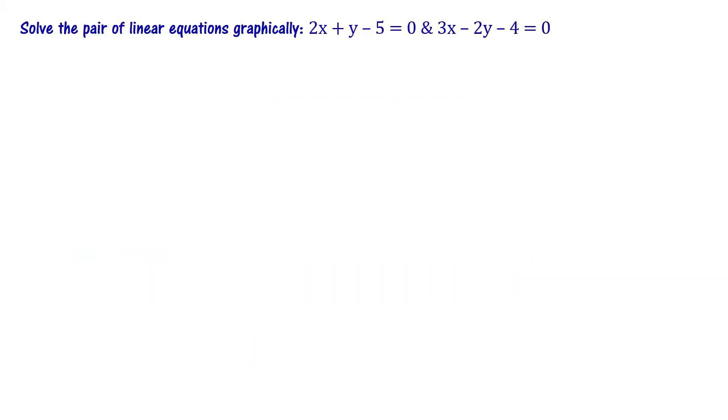Solve the pair of linear equations graphically: 2x + y - 5 = 0 and 3x - 2y - 4 = 0. These are linear equations in two variables, x and y. We have to solve these two equations using graph. What is the value of x and y that satisfies both the equations? We need to find data which satisfies these equations. For different values of x, what is the value of y you get? Tabulate that data for each equation.